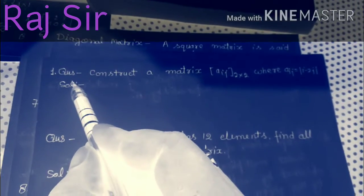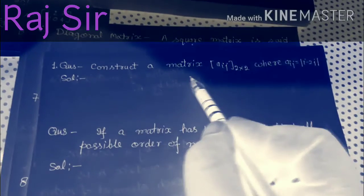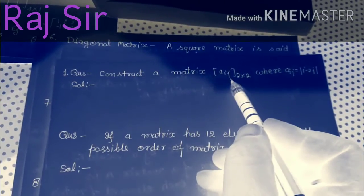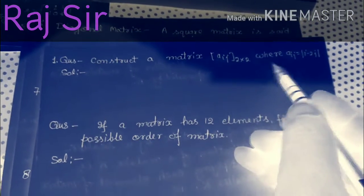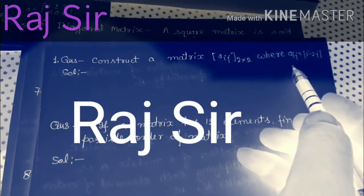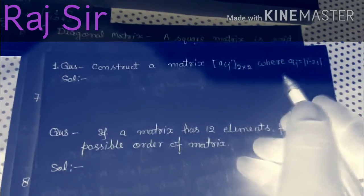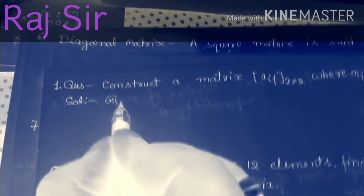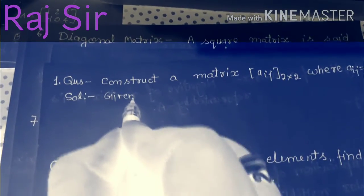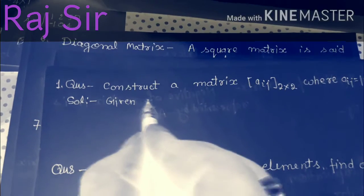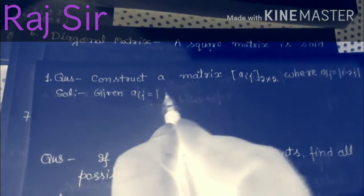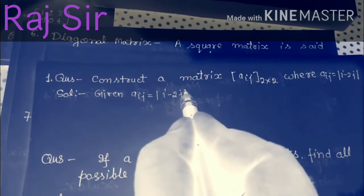Question number 1: Construct a matrix A of order i cross j, 2 cross 2, where Aij equals mod i minus 2j. So, given A(i,j) equal to mod i minus 2j.